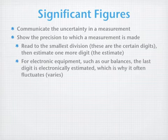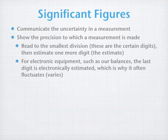For electronic equipment, such as our balances, the last digit is electronically estimated, and often you'll see it fluctuating or varying up and down. You'll ask in class which value to use, and I'll tell you: just pick one. It doesn't matter, because that is just an estimate.